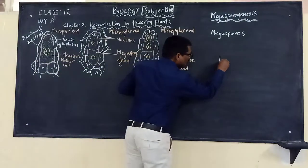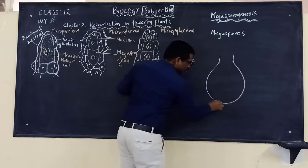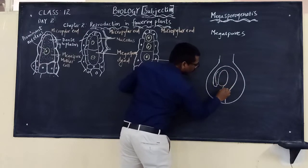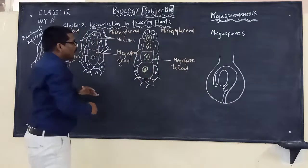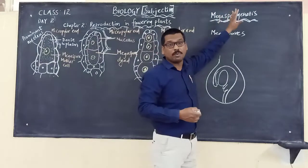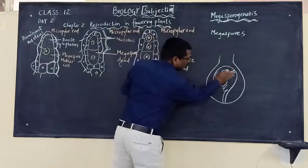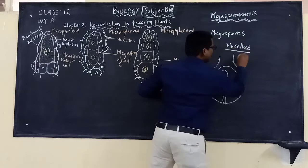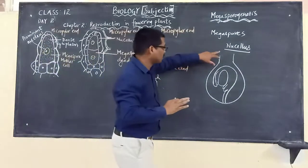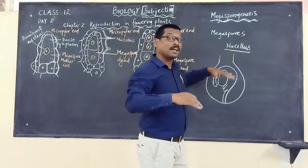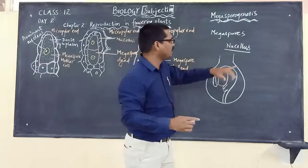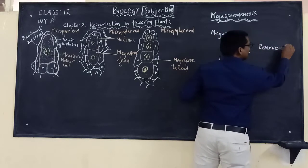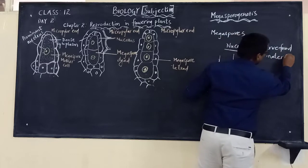Inside the ovary, the process of megasporogenesis is taking place. The ovary in the beginning is completely filled with cells called as nucellus cells. These nucellus cells are rich in nutritive material — reserve food material will be abundantly present in the nucellus cells.